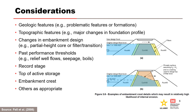The top figure is an example of a design change with the embankment cross section that occurs at 1 in 1000 AEP, with a partial height impervious core and chimney filter. Flow through rock fill can occur above the impervious core. The bottom figure is an example of a design change that occurs at 1 in 50 AEP with a partial height chimney filter.